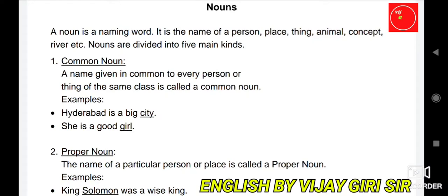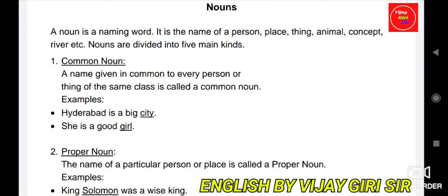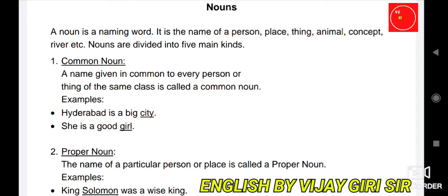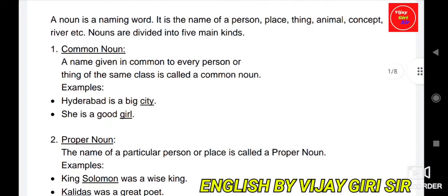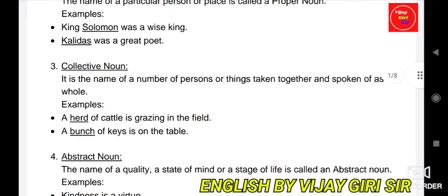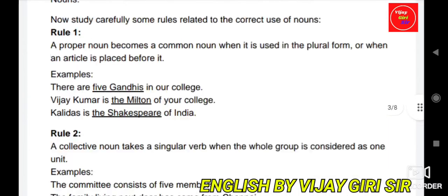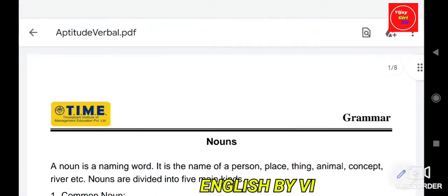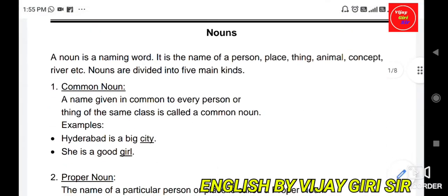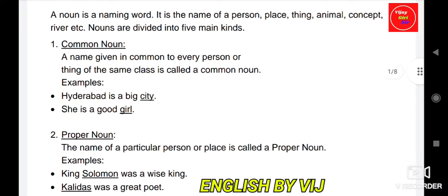Nouns are divided into five main kinds, and these kinds are: common noun, proper noun, collective noun, material noun, and abstract noun. So let's start one by one.